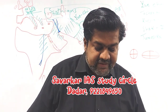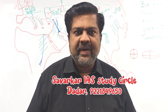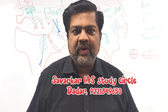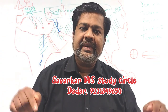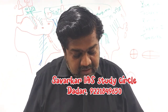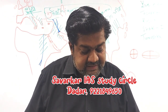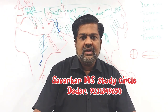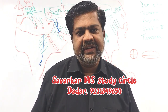Third question — consider the following statements. Statement 1: Ethmoid is a cranial bone. If you are aware, cranial bones form the brain box. There are a total of 8 cranial bones: frontal, occipital, sphenoid, ethmoid, 2 temporal, and 2 parietal. So ethmoid is indeed a cranial bone — statement 1 is true.